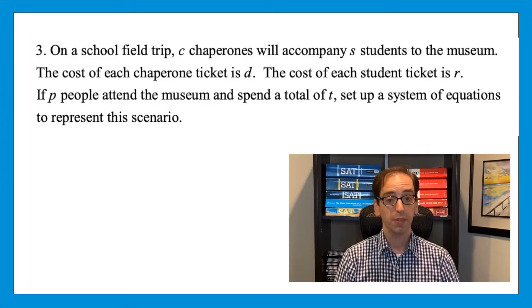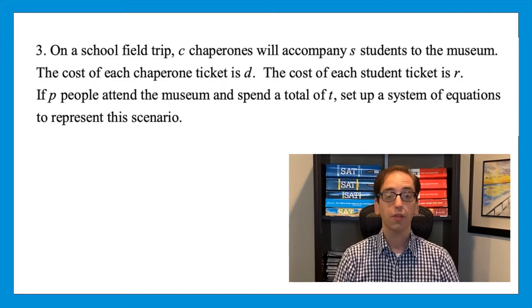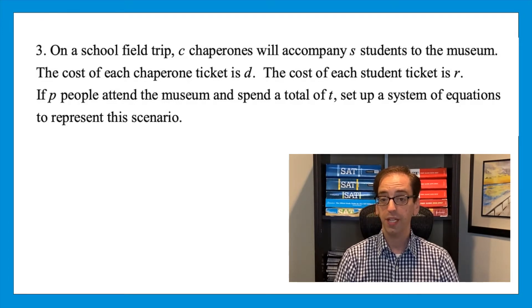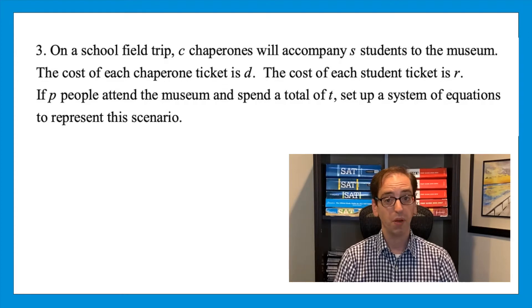Let's see how this works on an actual question. On a school field trip, c chaperones will accompany s students to the museum. The cost of each chaperone ticket is d. The cost of each student ticket is r. If p people attend the museum and spend the total of t, set up a system of equations to represent this scenario. I'll let you think about it for a moment. Press pause and then come back.